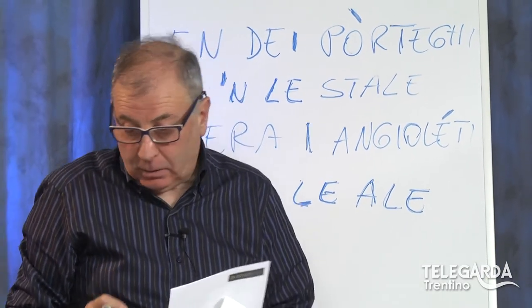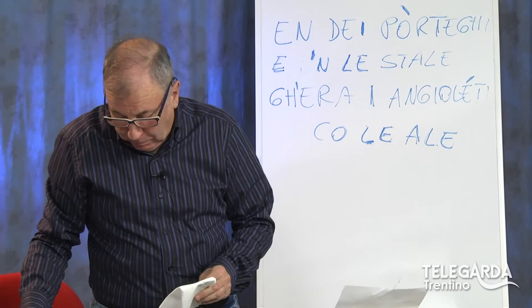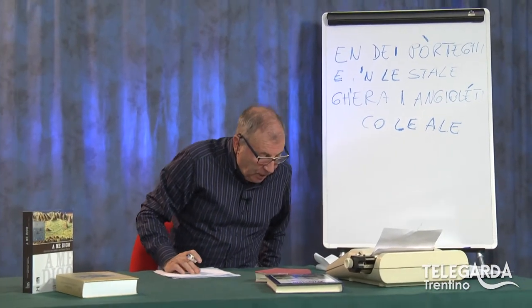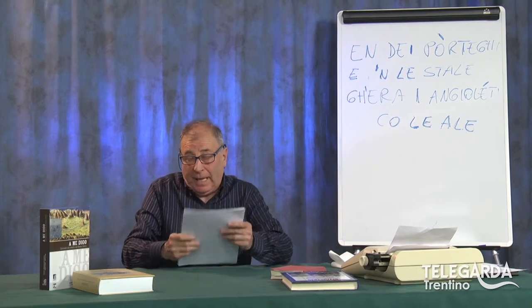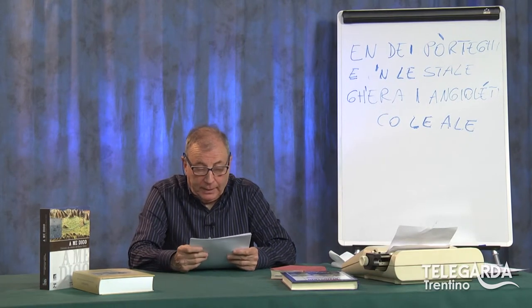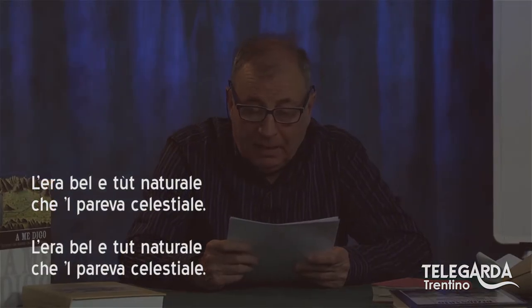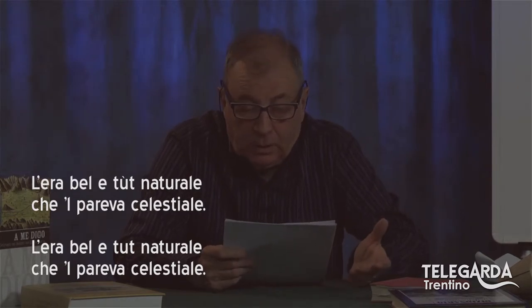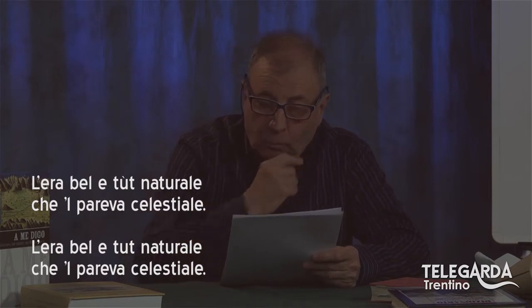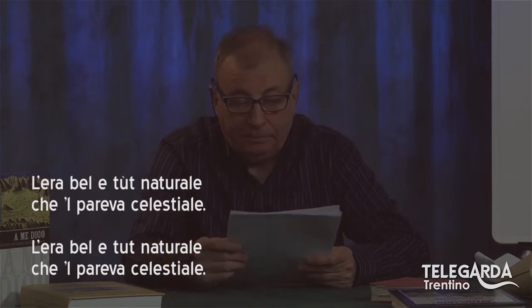Questo per dire che oggi vi presento alcuni versi scritti in modo scorretto, che io adesso andrò a correggere. Naturalmente voi vedrete prima i versi scorretti e poi, evidenziati, i versi corretti. Attenzione ai versi sbagliati, scorretti: 'L'era bel e tut naturale che il pareva celestiale.' Qui c'è solo una cosa: quel 'tut' accentato, che non serve metterci l'accento. 'Tut' si pronuncia tut. Per il resto è regolare: 'l'era bel e tut naturale che il pareva celestiale.'